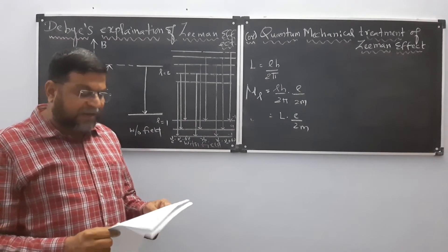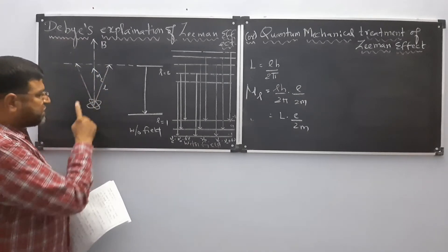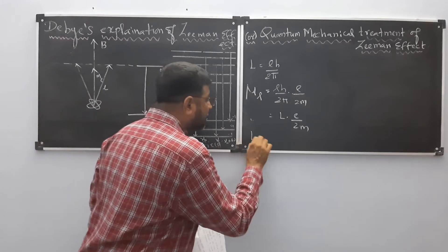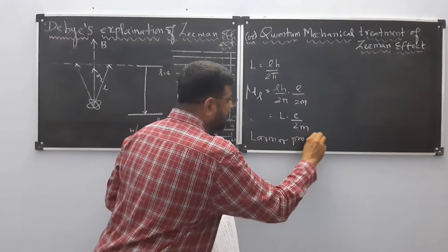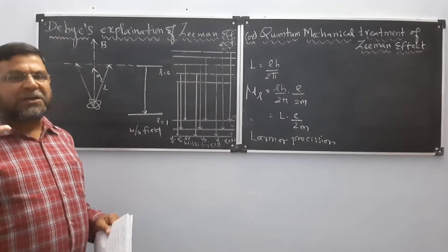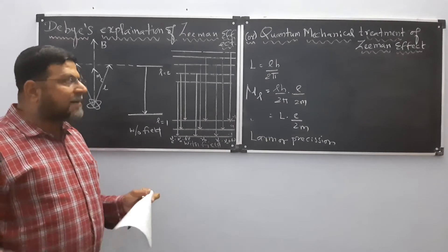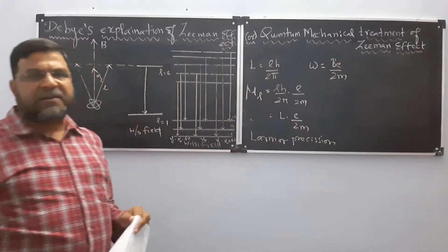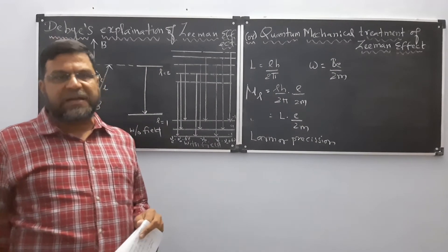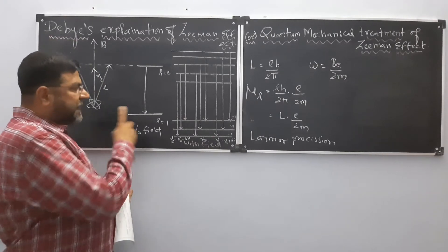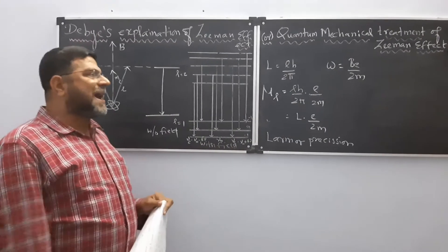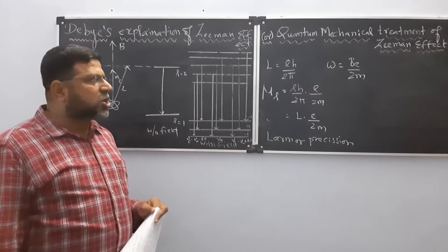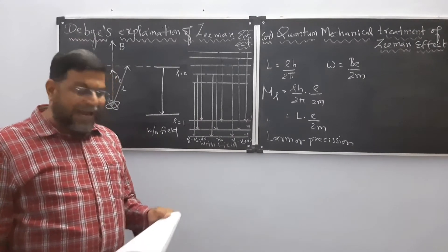In the presence of an external magnetic field of strength B, the vector L precesses — spinning like a top — in the direction of the magnetic field. This precession is known as Larmor precession, which is movement in the form of a spinning top. The Larmor precession frequency is given as ω = Be/2m, where B is the strength of the magnetic field, e is the charge, and m is the mass of the electron.